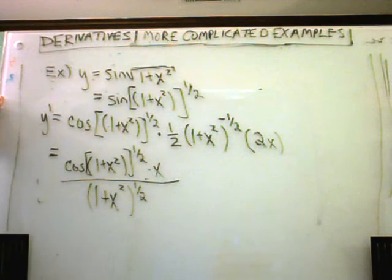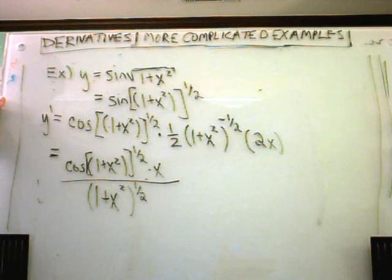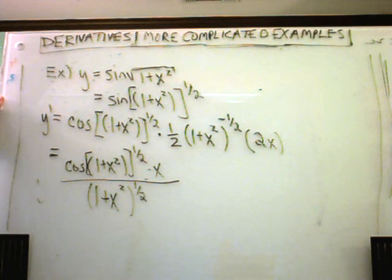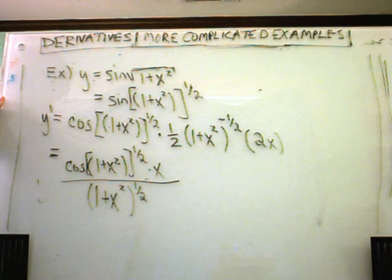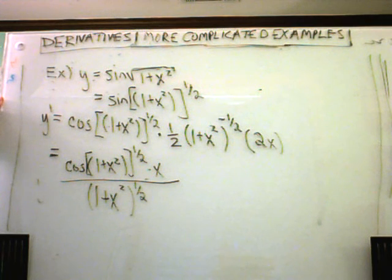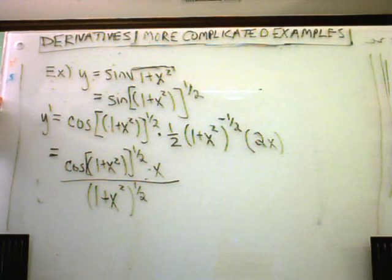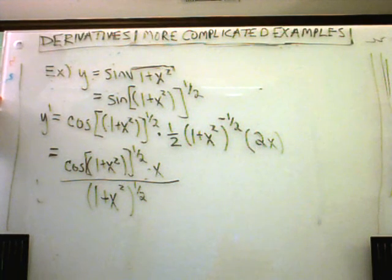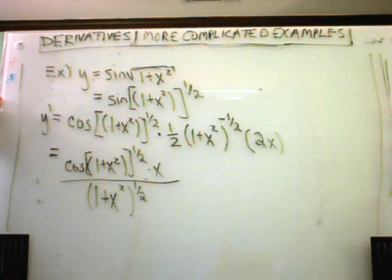I hope these examples shed a little more light on it. When you look at these problems at the very beginning, just think about what rules you need to use — do I need the product rule, yes or no; do I need the quotient rule, yes or no — and as you step through taking derivatives of individual parts, think about where you need to use the chain rule and just go from there.